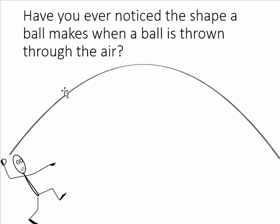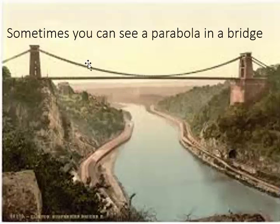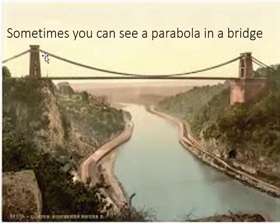If you've ever noticed the shape a ball makes when it's thrown through the air — kind of up in an arc — it's going to go up, it's going to curve, and then it's going to come back down. That curved shape, which kind of looks like a U, is called a parabola. You might have also seen it in something called a suspension bridge, where it shows up as that U-looking shape between the two towers.